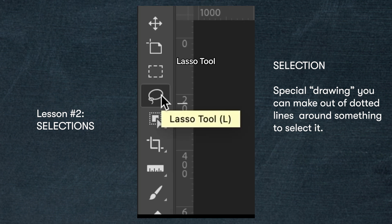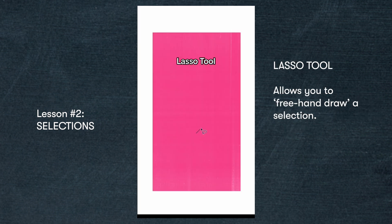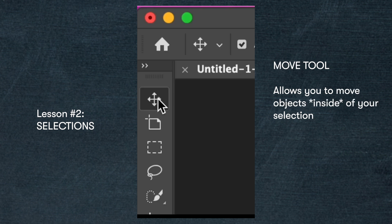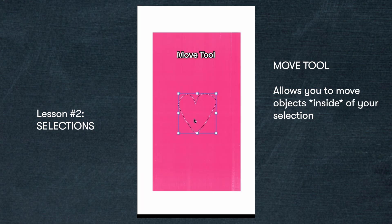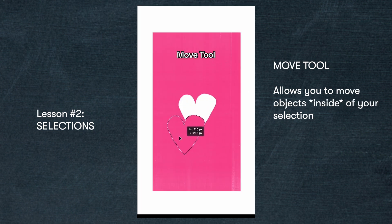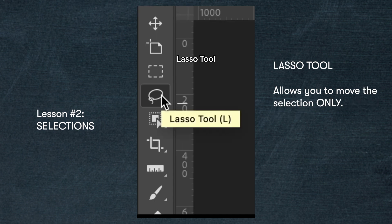Here's my construction paper and I'm going to use the lasso tool to draw the selection. I'm going to draw a heart just like I did on the construction paper. Do you see the little dashes? That's how you know it's a selection. If I select the move tool I can click on the heart and move it around, the same way I showed you on paper.